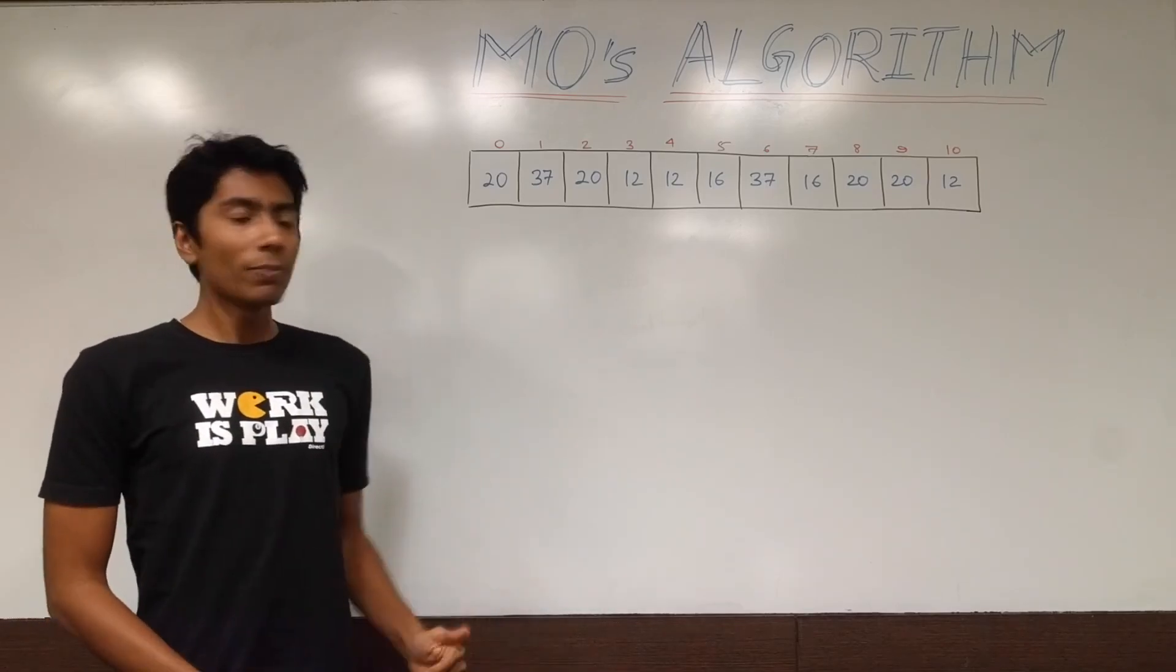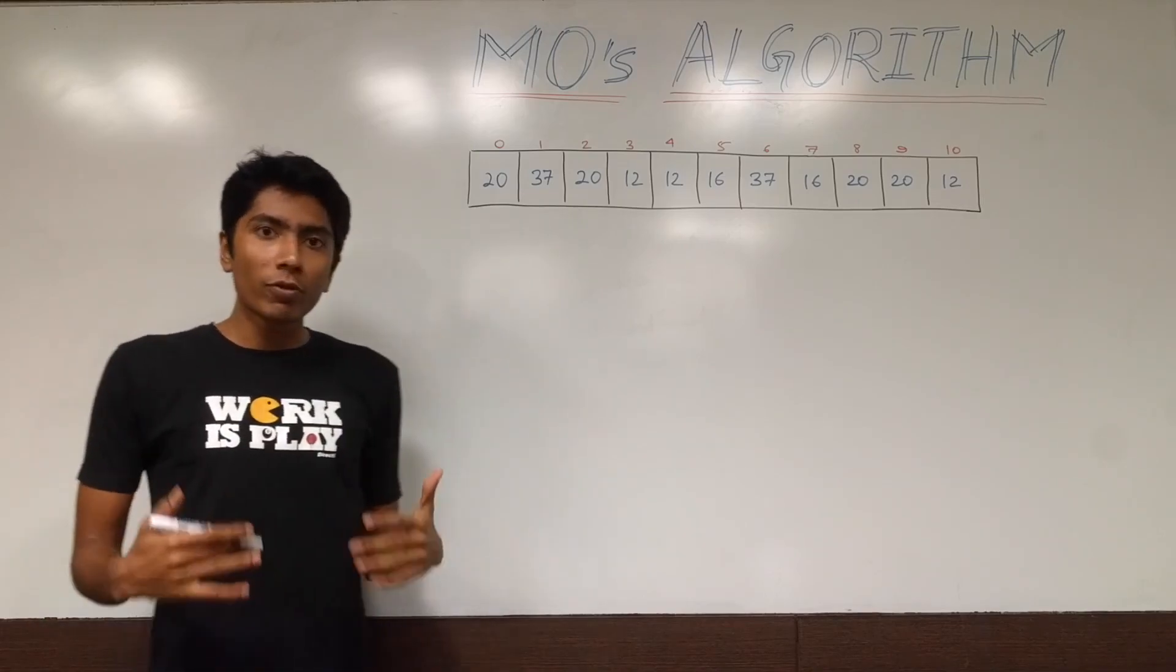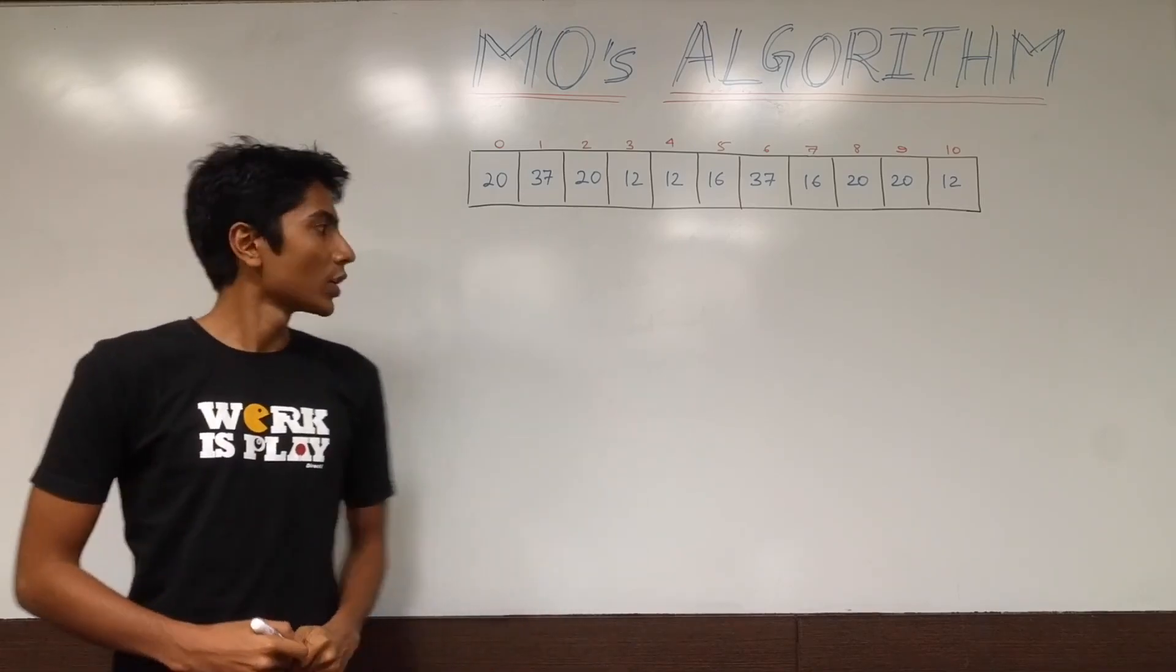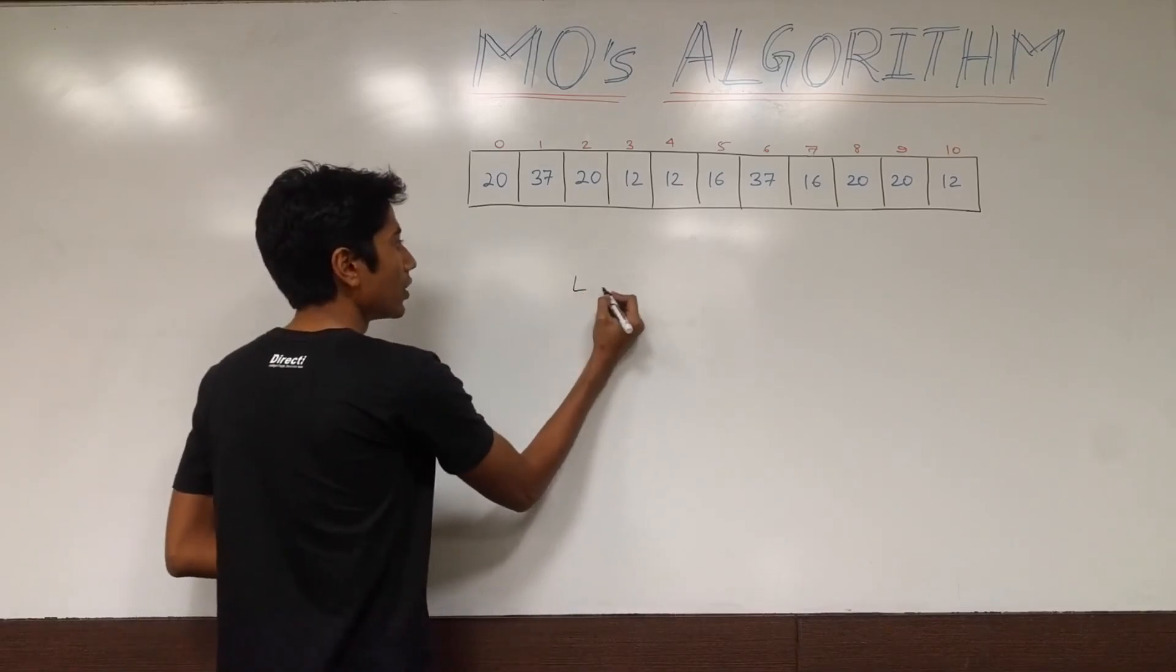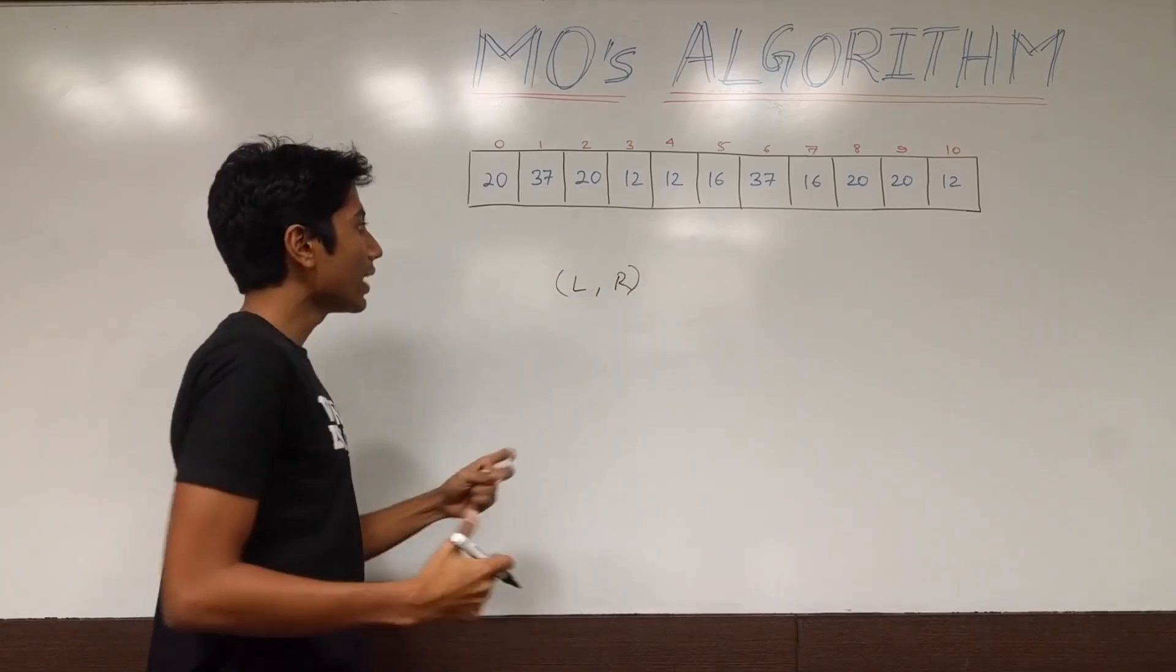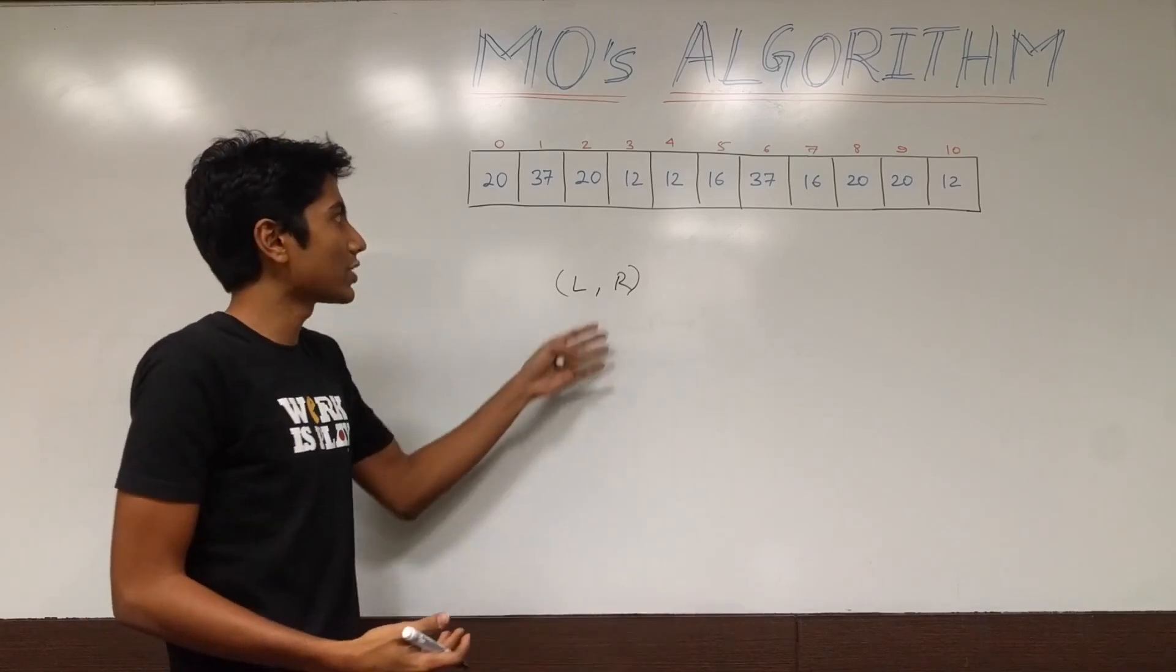It just uses some sort of common sense logic in a way to reduce the overall complexity of our queries. So this is the problem. We have an array and we are supposed to perform some sort of range queries on it.